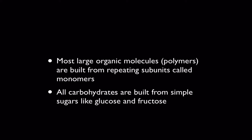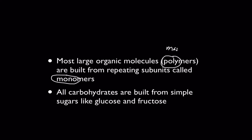First of all, we need to understand what a polymer is. A polymer is a very large molecule. They're almost always organic, by the way. And they're made up of repeating subunits or repeating pieces that we call monomers. And these two words — mono and poly — are probably familiar to you from math. Poly means many, and mono means one.